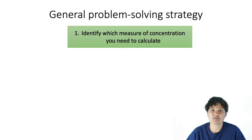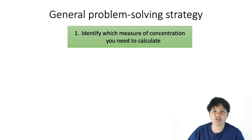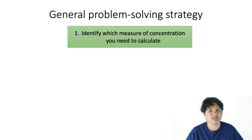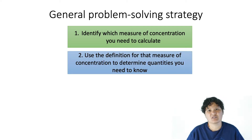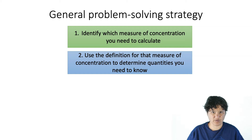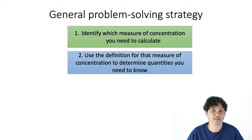The first step is to identify which concentration unit you're trying to find. Sometimes you'll have a problem that requires you to use a particular concentration unit in order to get the right answer — for example, using molality for freezing point depression — and sometimes that's not going to be stated outright. The second step is to remember the definition of that unit and use it to determine what quantities you need to know. For example, if you're looking for mass percent of some chemical in a solution, you need to know the mass of that chemical as well as the total mass of the solution.